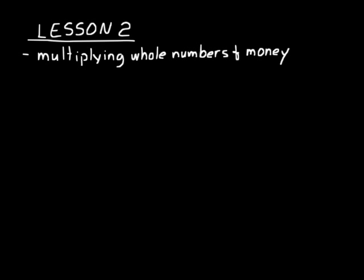You can think of multiplication as adding the same number several times. For example, maybe we had 21 and we wanted to add that four times. Twenty-one plus twenty-one plus twenty-one plus twenty-one equals eighty-four. We can get the same result by multiplying twenty-one times four. There are four multiples of twenty-one — that's how you can think about it.